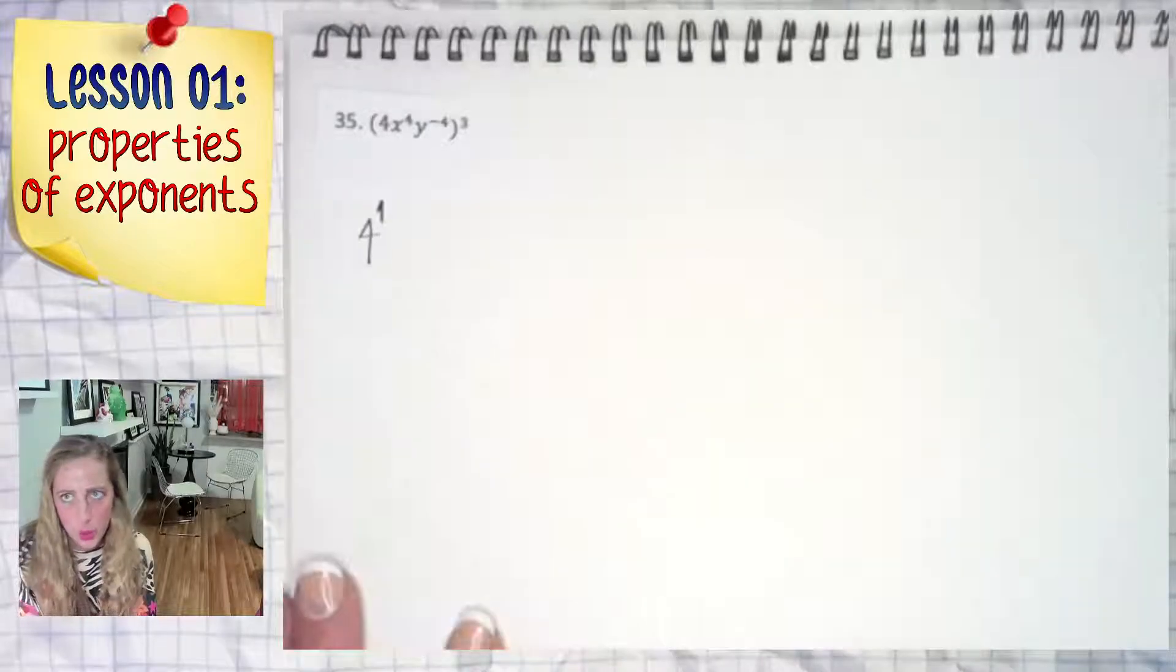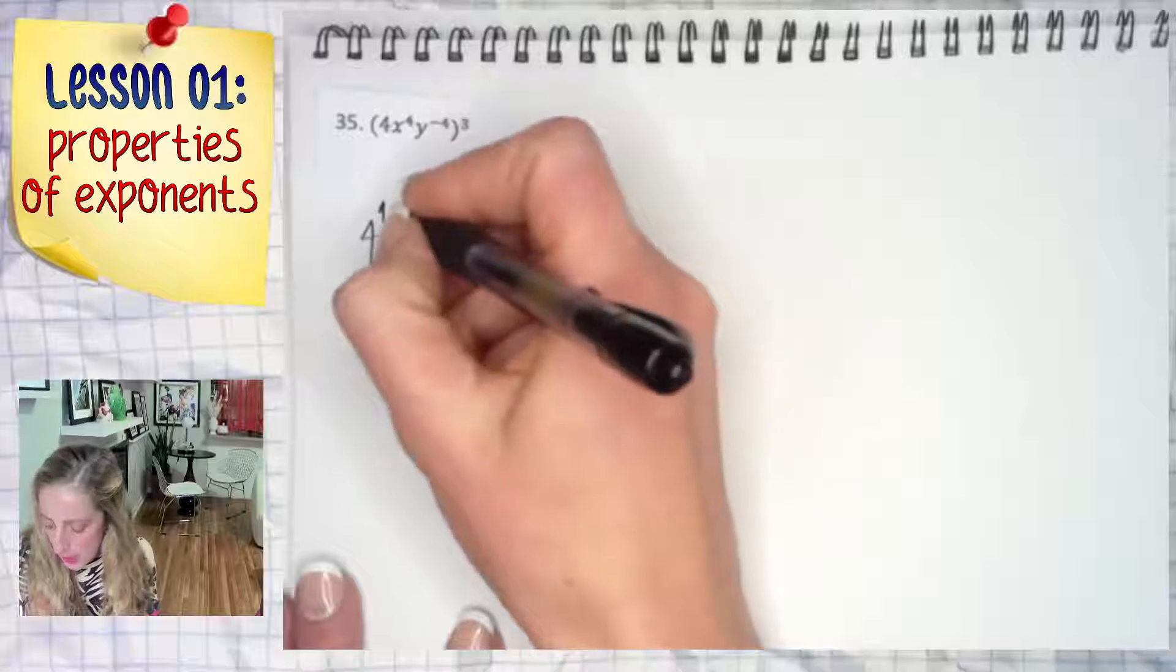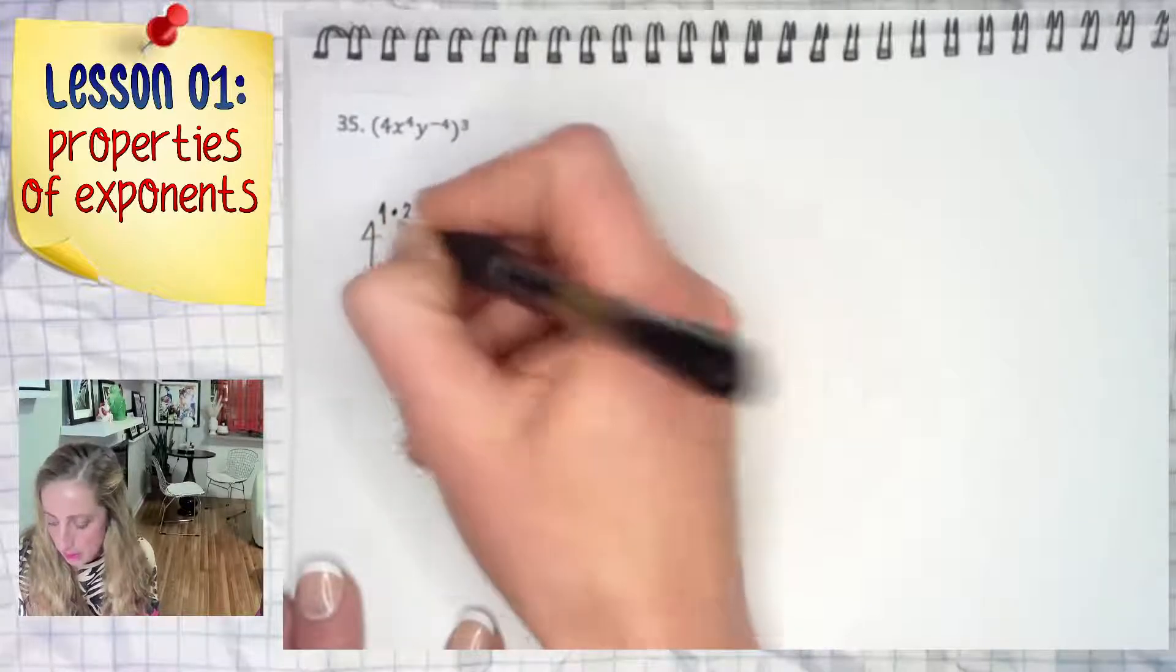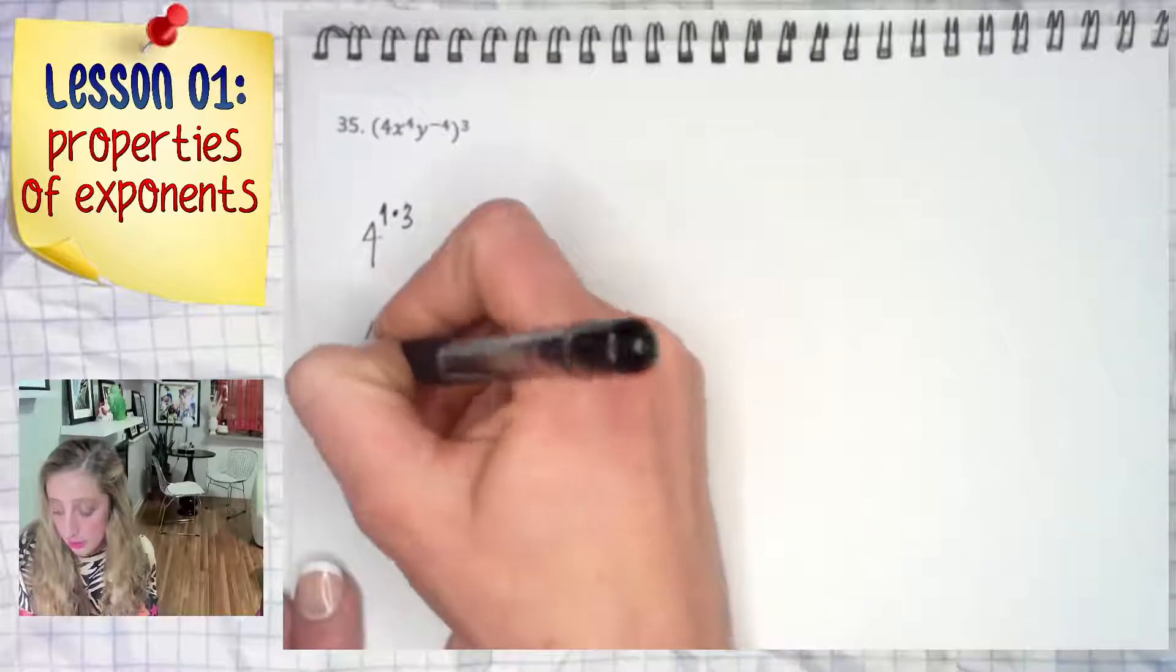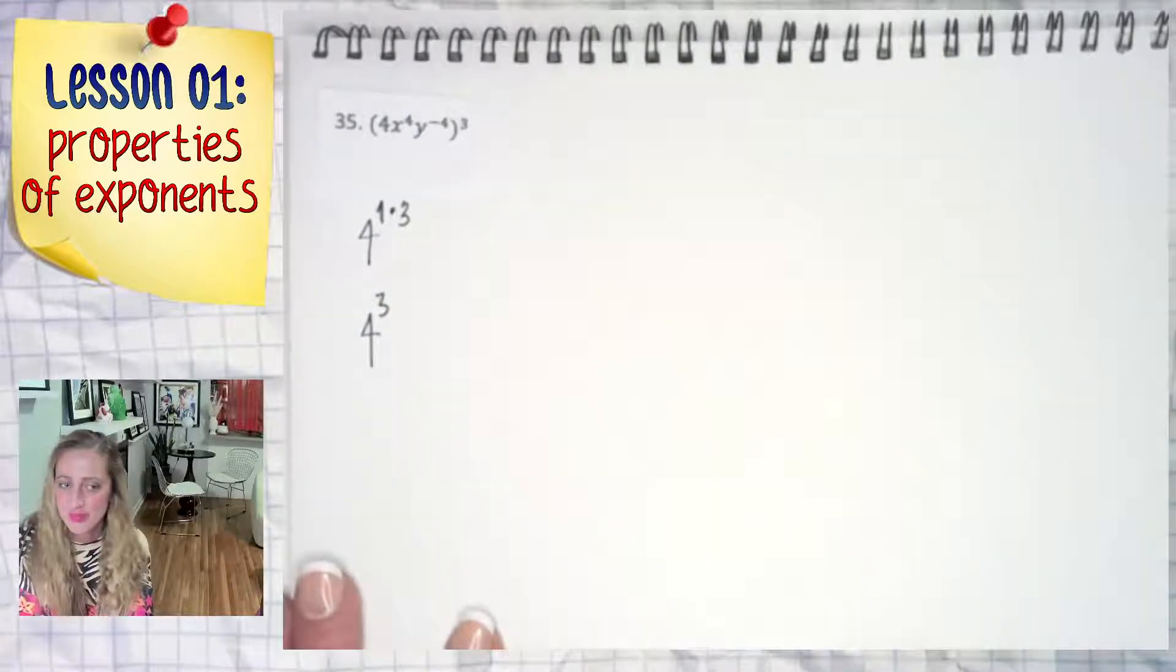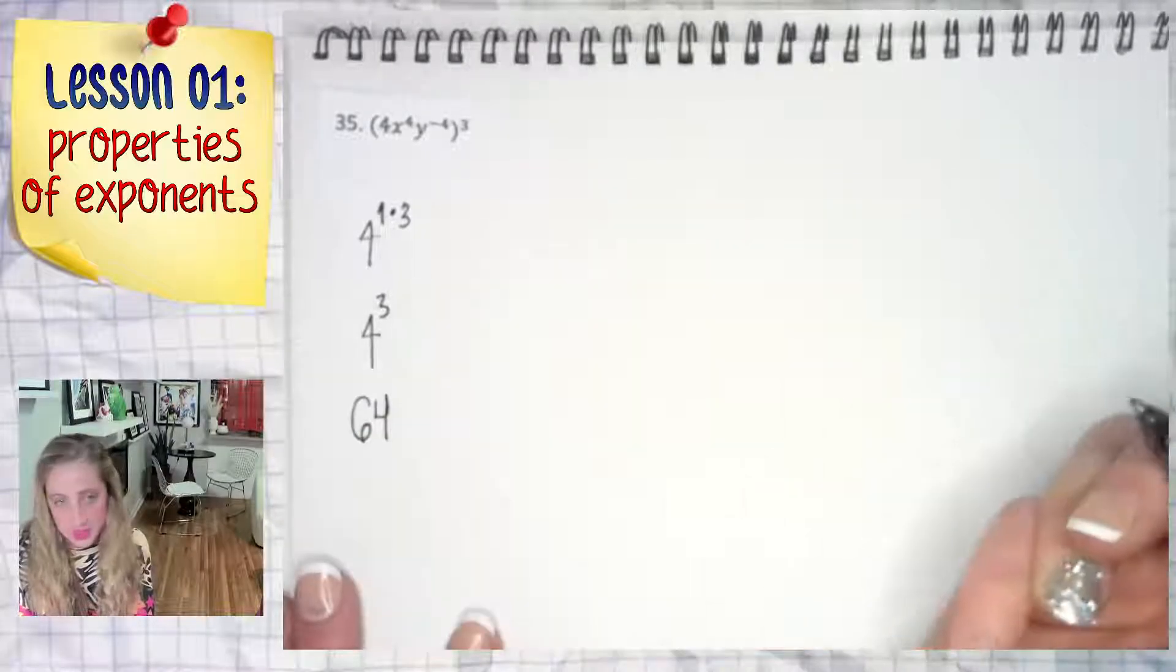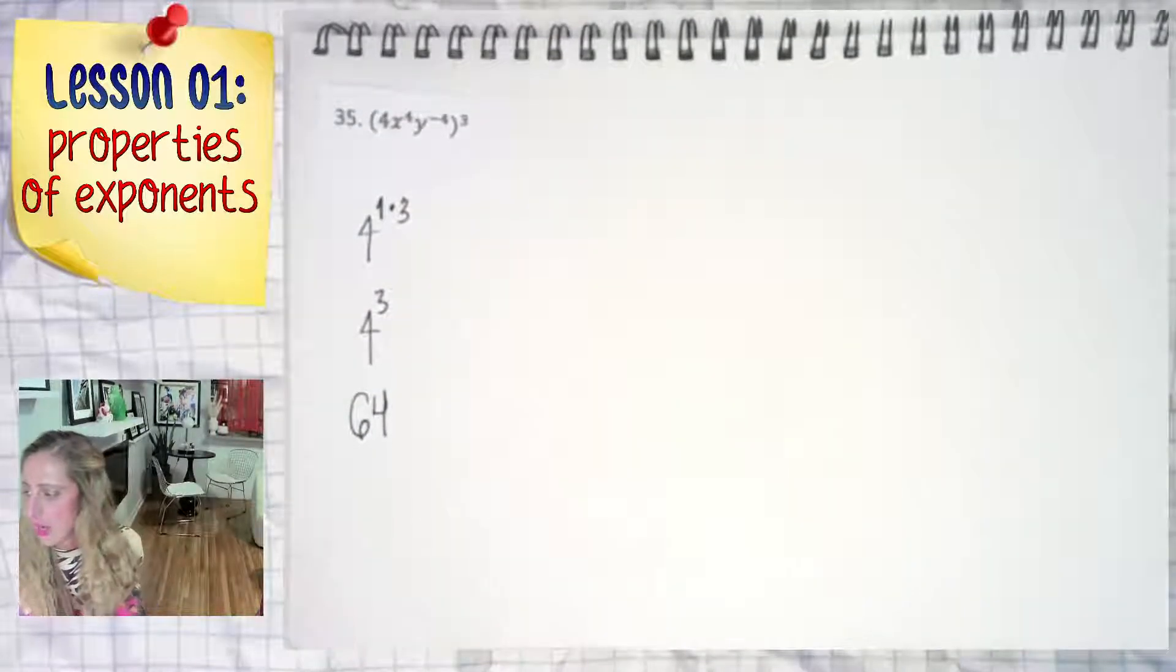We're going to multiply that one by three, so what does that become in the next line? Four to the third, and should you have that memorized? Yeah, you should. What is four to the third? 64. So far, that is where we're at.